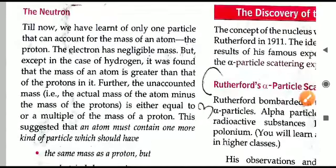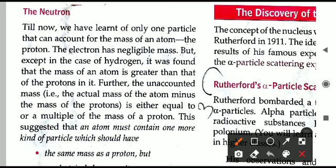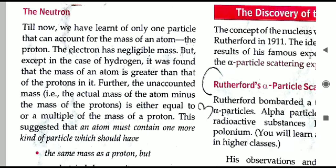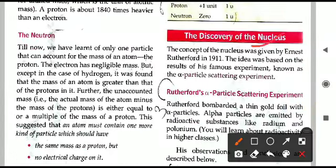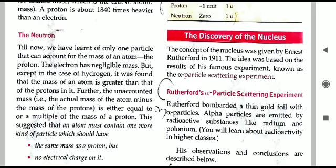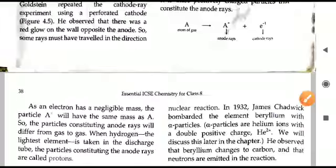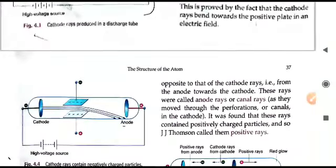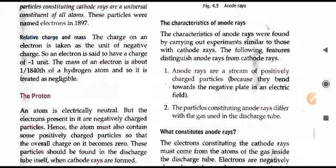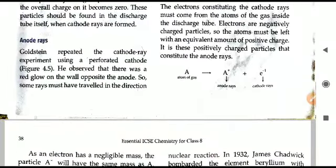The last sub-atomic particle is the neutron, and it is electrically neutral — meaning it does not carry any charge. We will be discussing the neutron and the nucleus — the center of the atom — in the next video. Today we have discussed all aspects related to the anode rays and the protons, including their characteristics, charge, and mass. You can read through this again, and we will be continuing in the next video. Thank you for today.